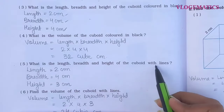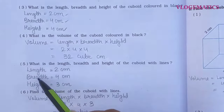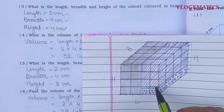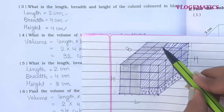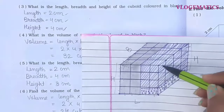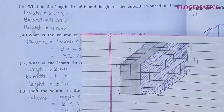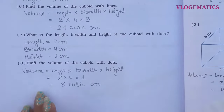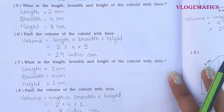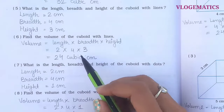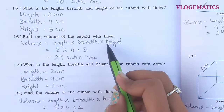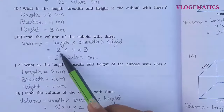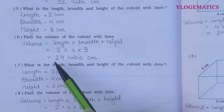Question 5: what is the length, breadth, and height of the cuboid with lines? The lines part has length 2 cm, breadth 4 cm, and height 3 cm. Question 6: find the volume of the cuboid with lines. Using length × breadth × height: 2 × 4 × 3 = 24 cm cubes.